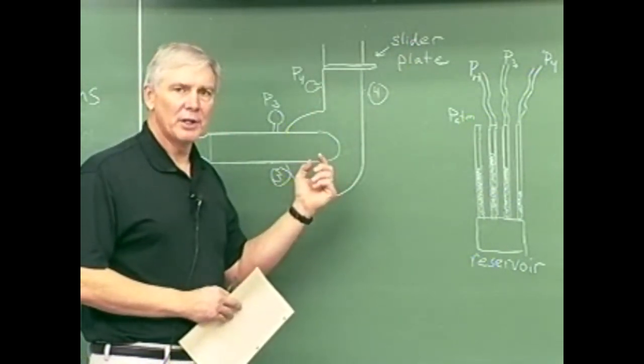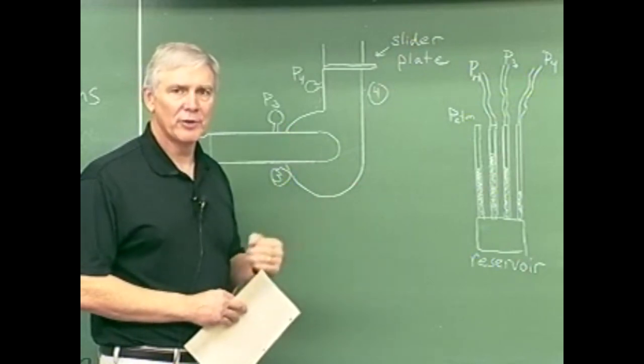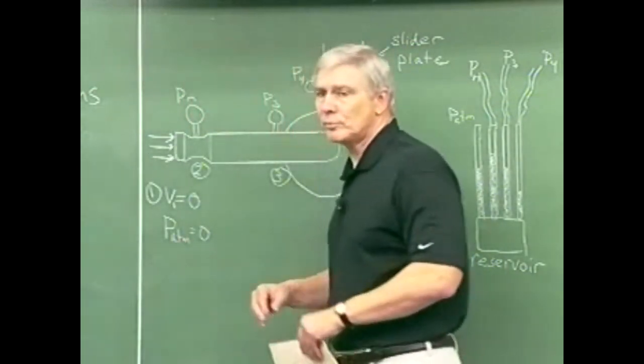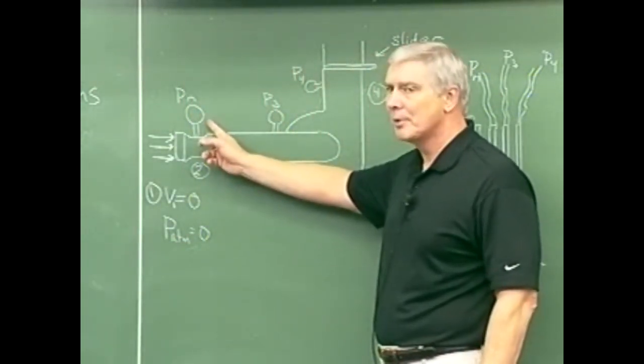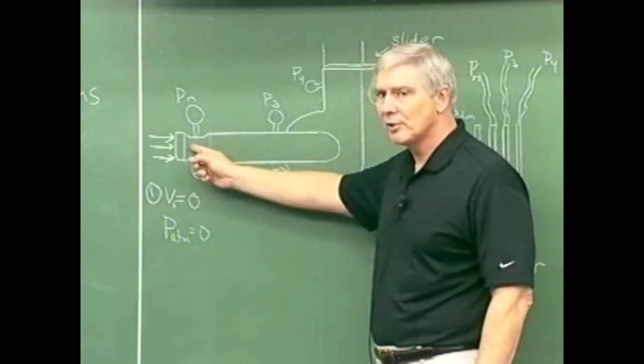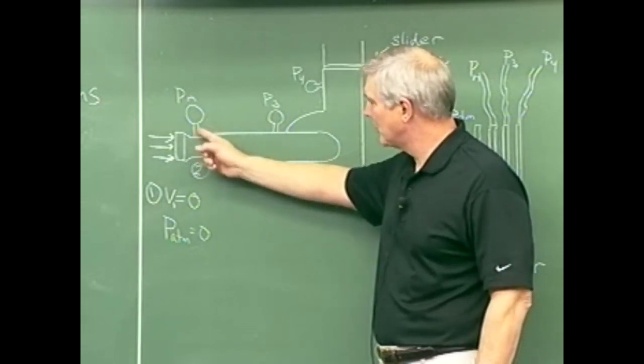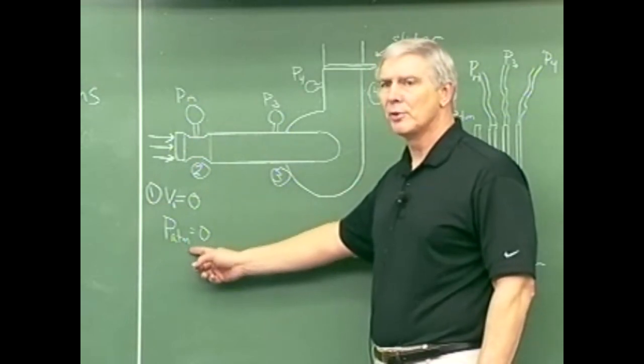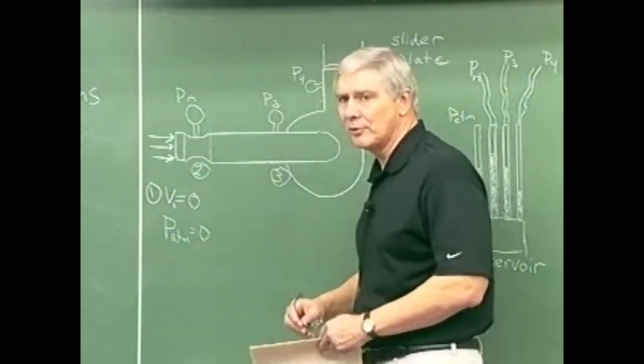We're also going to need the velocity or we actually need the flow rate coming into the fan. And the way we get the flow rate coming into the fan is over here we have a nozzle. And the nozzle is also instrumented with a pressure tap. And the nozzle has a contraction section here so as the flow comes through the pressure decreases. And we can measure the difference between the flow or the pressure at the nozzle and the pressure at the room. And using Bernoulli's equation, we can get the flow rate.